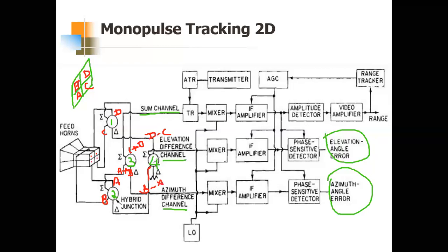We need two things: an elevation difference channel and an azimuth difference channel. The elevation difference is B plus D minus (A plus C) — that is, the top plane minus the bottom plane — which corresponds to the elevation angle theta. The azimuth difference is A plus B minus (C plus D), which corresponds to the azimuth angle phi.